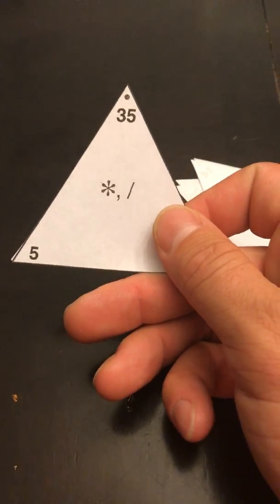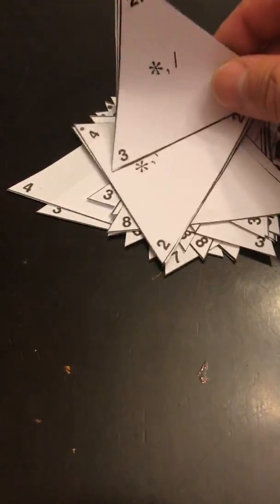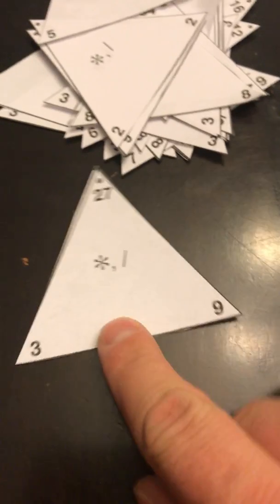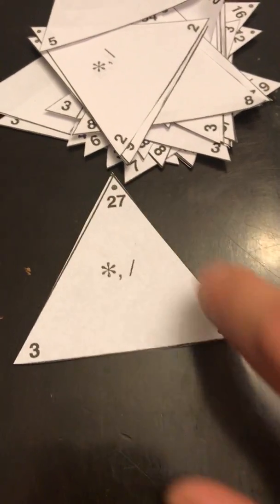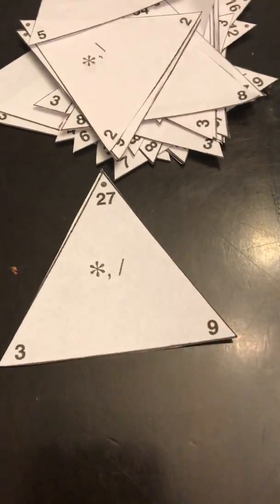35 divided by 5 is 7, boom. I haven't mentioned this yet, but one of the things that I really like about these fact triangles is, first of all, the answers are on the front so it's not too far away from you. But second of all, it really emphasizes the relationship between multiplication and division. We've got the fact families all the way around, you just got to figure out what the missing corner is.